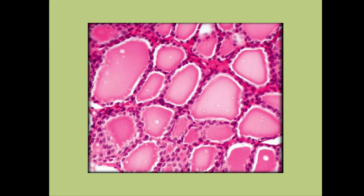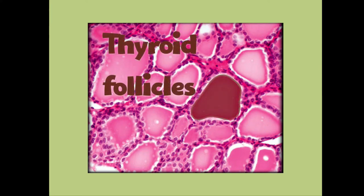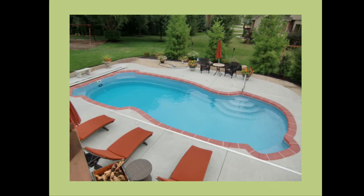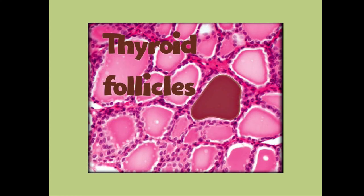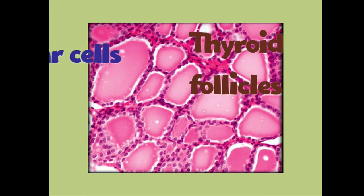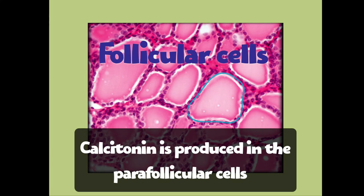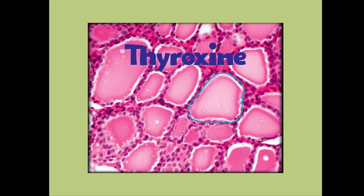Now let's look inside the thyroid under a microscope at the individual thyroid cells, called thyroid follicles. Imagine a pool — the liquid inside is called the colloid, and that colloid is what stores the thyroid hormones T3 and T4. The follicular cells, which form the border around the pool, are responsible for making T3 and T4, which are then stored in the colloid.